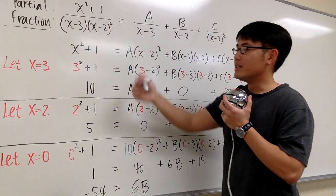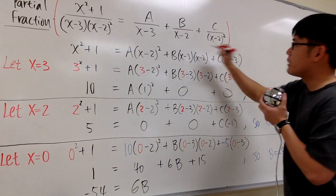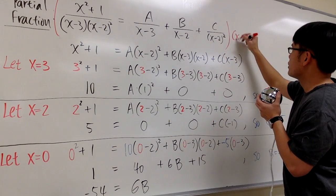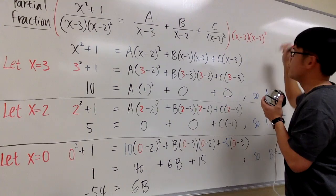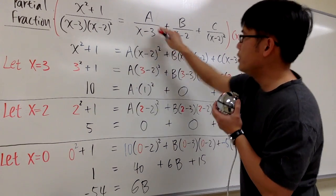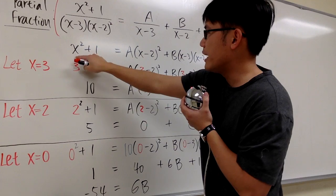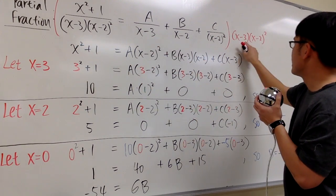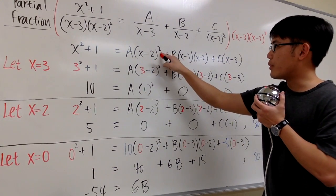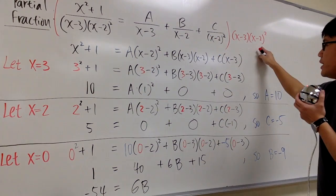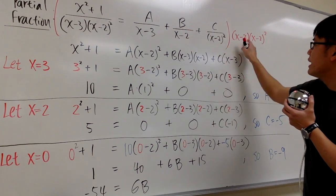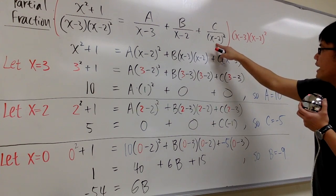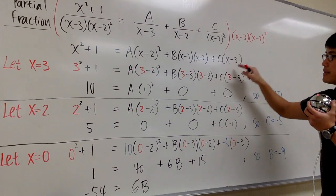We don't like fractions, so what we can do is multiply everything by the lowest common denominator, which is just the original denominator: x minus 3 times x minus 2 to the second power. We distribute it into all the terms. For the first one, we get x squared plus 1 left. For the second one, the x minus 3 will cancel, so we have a times x minus 2 to the second power. One of the x minus 2 will cancel for the b term, giving b times x minus 3 times one x minus 2. For the last one, the x minus 2 squared cancels, leaving c times x minus 3.